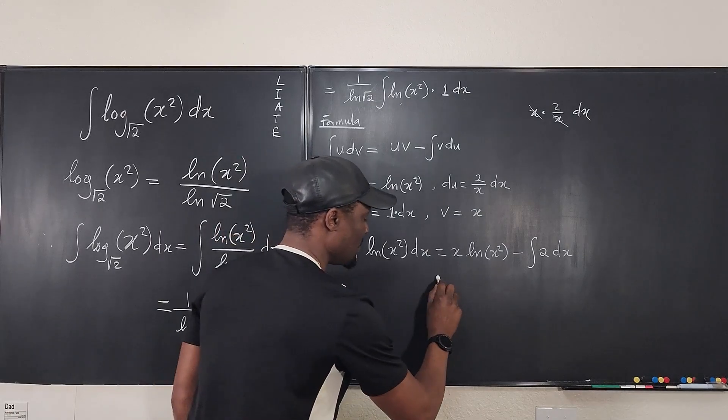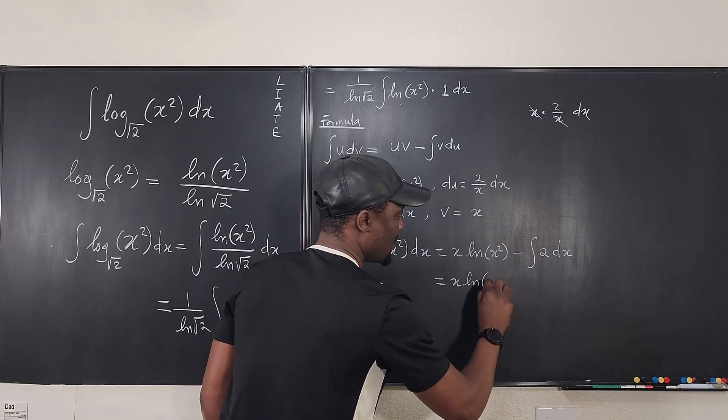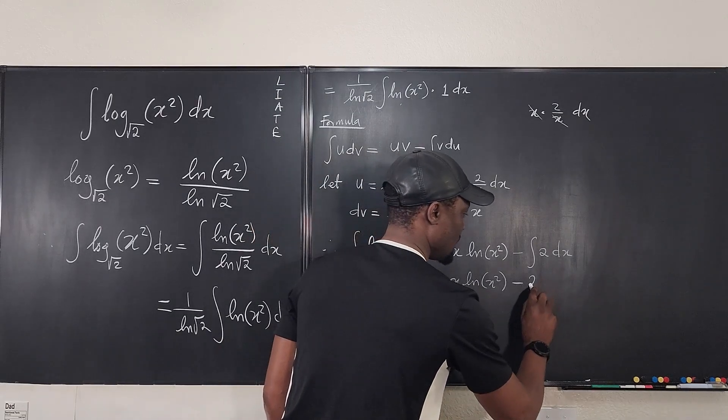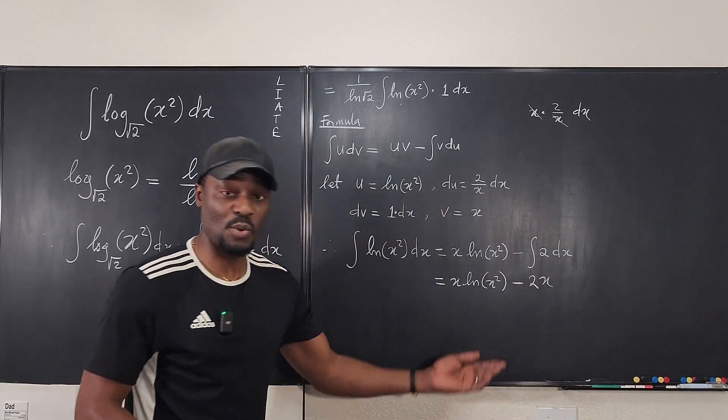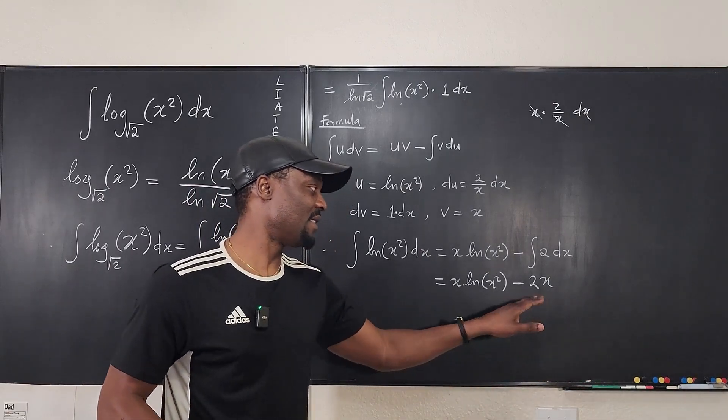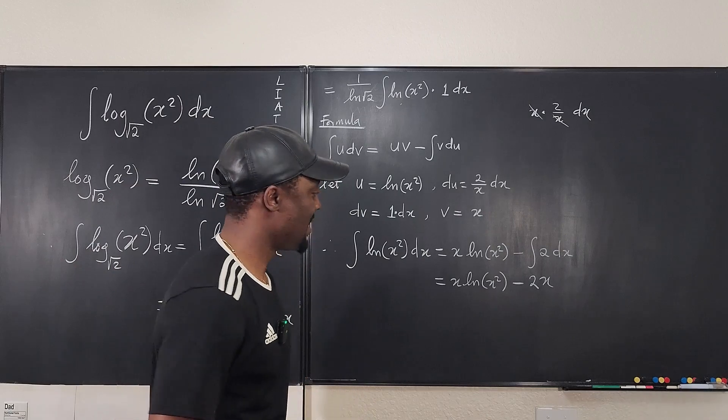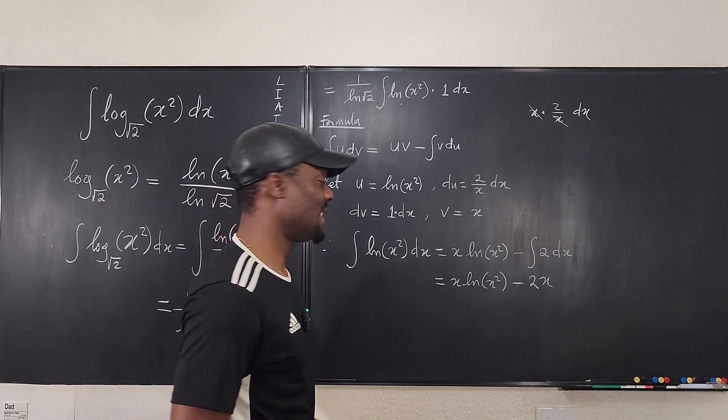So which means we have x ln of x squared minus, if we integrate this, what do we get? We get just 2x. At this point, you can say plus c, but at this point, if I'm doing integration by parts, I always leave the plus c at the very end. Otherwise, you have too many c's.